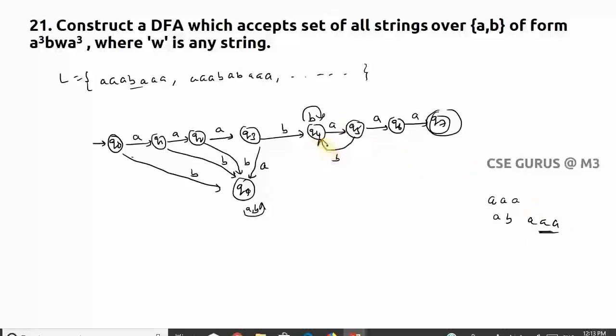Now with q6, that means after taking two a's, it is searching for a. If you get a, you will go to final state. But after two a's, if I get b again, I need to search for three a's. So that's why at q6, if I get b, I need to go to q4.